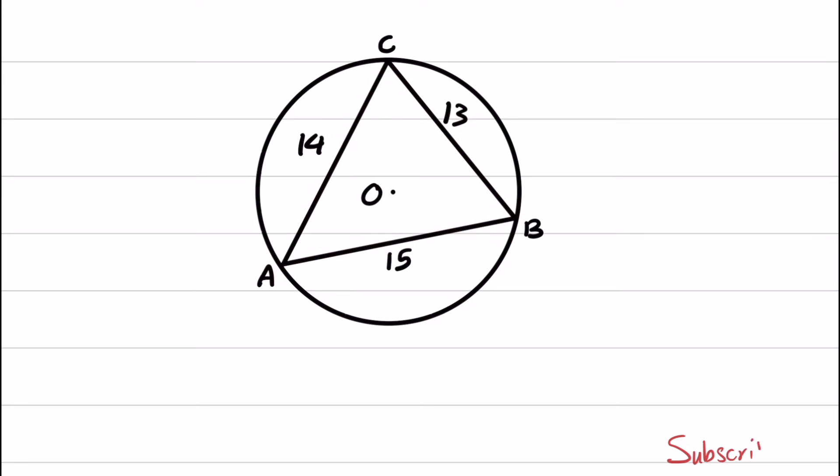The lengths of the sides in this triangle are given as 13, 14, and 15. The question asks to find the radius of this circle.